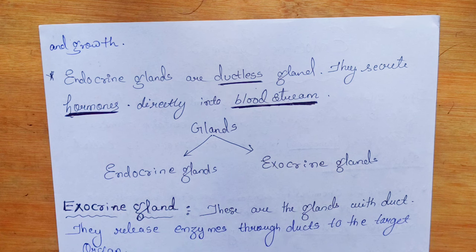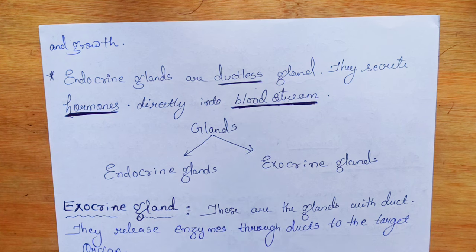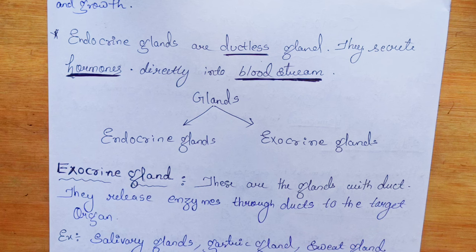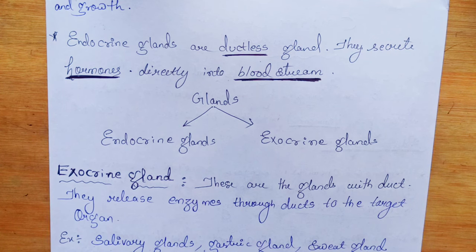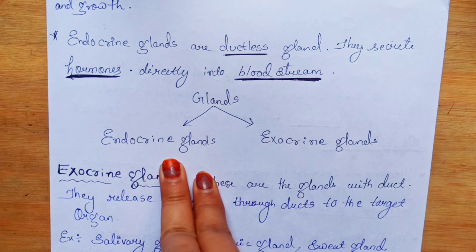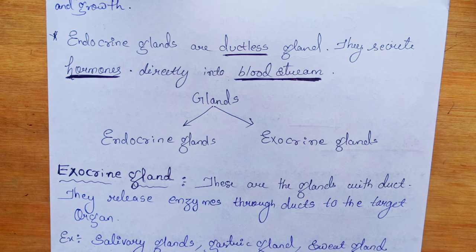To summarize: endocrine glands are ductless, they secrete hormones, and those hormones are released directly into the bloodstream. These are the three key things to remember about endocrine glands. Glands are of two types: endocrine glands, which are ductless and release hormones into the bloodstream, and exocrine glands.